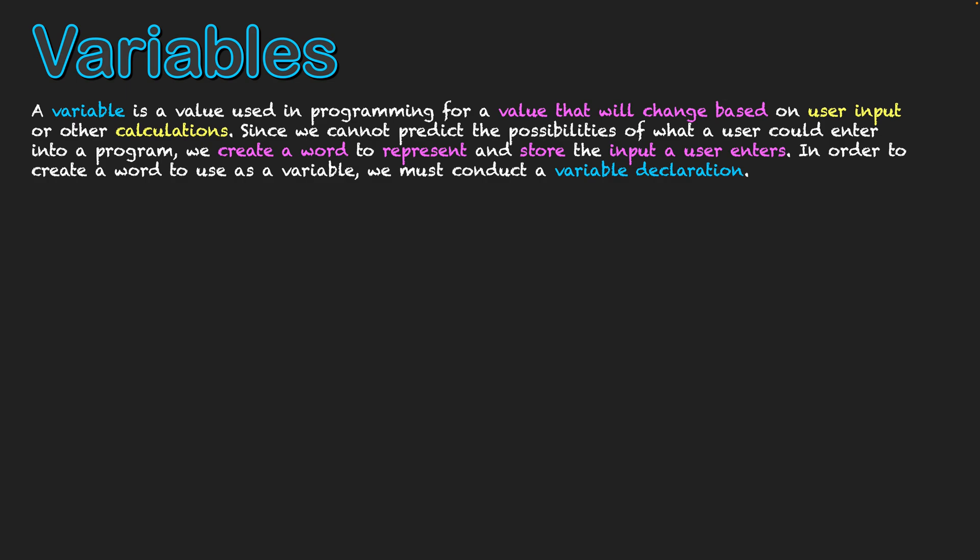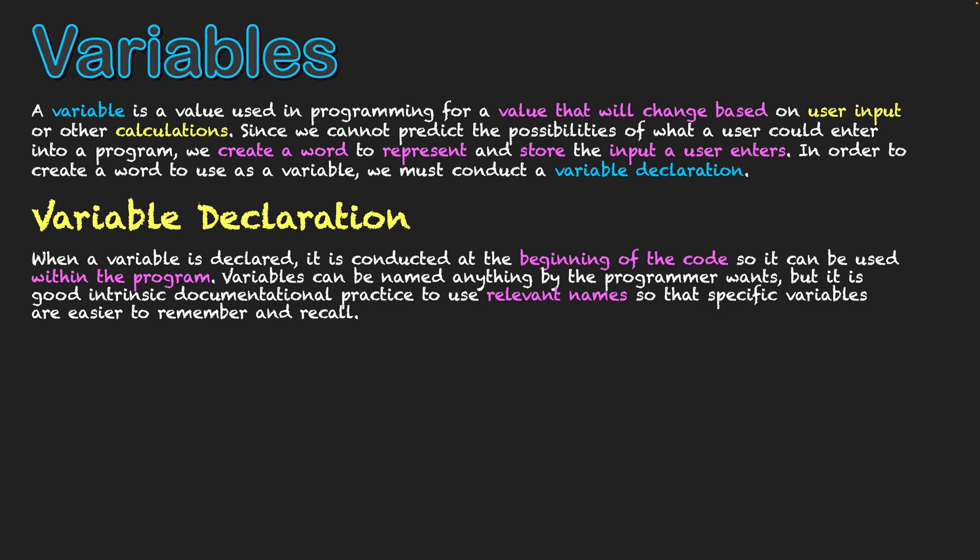In order to create a word to use as a variable, we must conduct a variable declaration. When a variable is declared, it is conducted at the beginning of code. That might be right at the top of your script, or it could be in the subsection related to where the actual variable is going to be used.